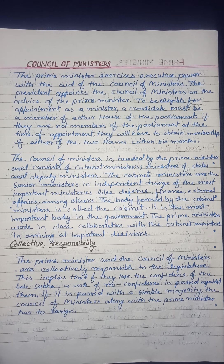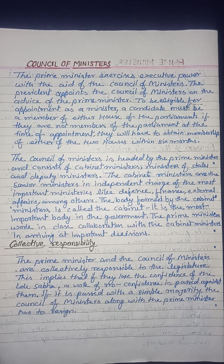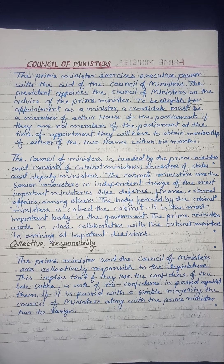The prime minister works in close collaboration with the cabinet ministers in arriving at important decisions — collective responsibility. The prime minister and the council of ministers are collectively responsible to the legislature. This implies that if they lose the confidence of the Lok Sabha, a vote of no confidence is passed against them. If it is passed with a simple majority, the council of ministers along with the prime minister has to resign.